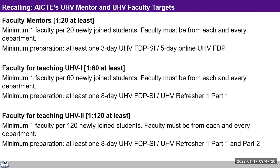The targets AICTE has set for faculty mentors, faculty for teaching UHV-1 and UHV-2, require one faculty member from every department of every college for every 20 newly joined students. So if there are 20 newly joined students in the civil engineering department, then that department must prepare one faculty member. If mechanical engineering has 60 students joining per year, then they must prepare three faculty members. The ratio for faculty mentors is one to twenty.